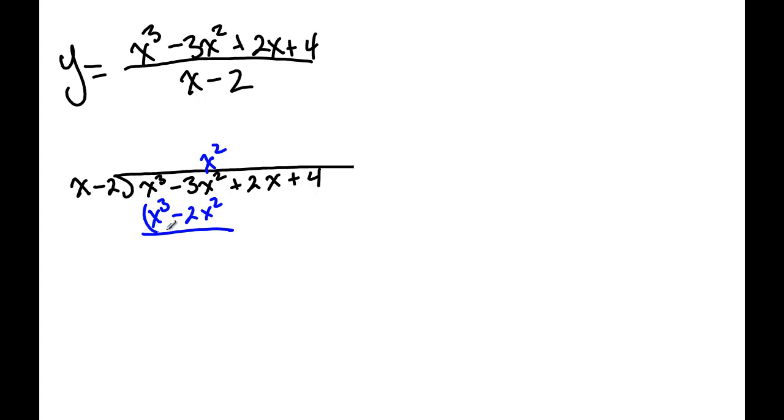And then of course we subtract. That means those go, and negative 3 plus 2 is minus x squared, and then you bring down the next term. So let's look at that division. You ask yourself what do you multiply x by to get negative x squared? Well that's negative x.